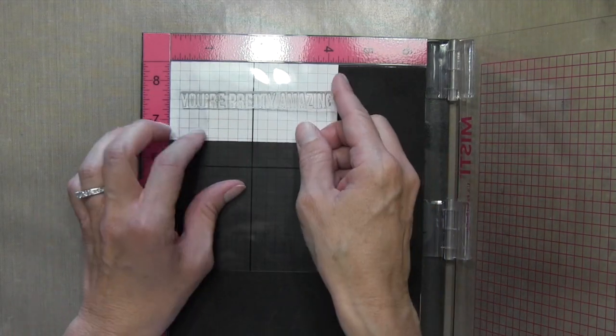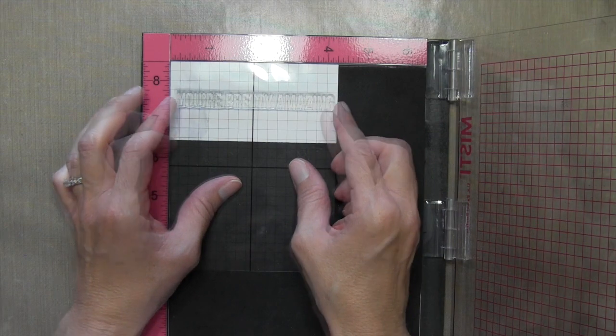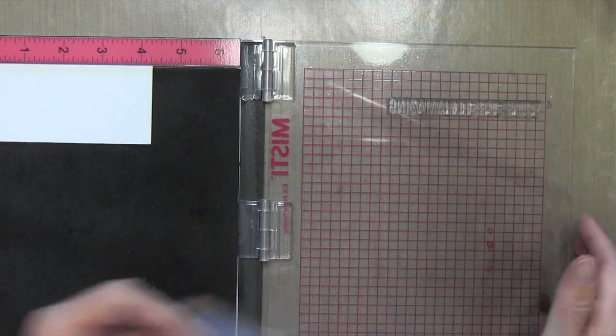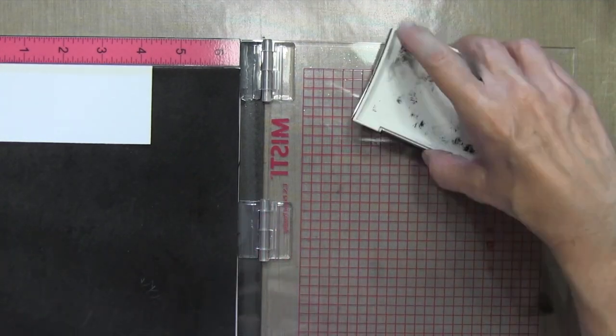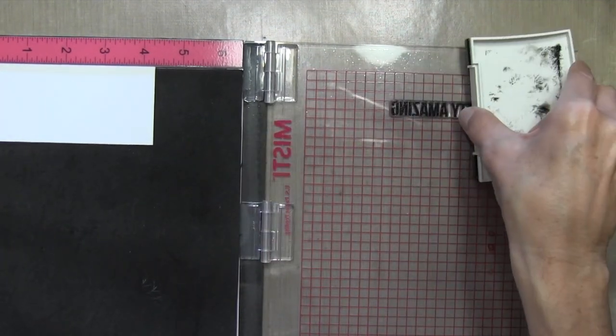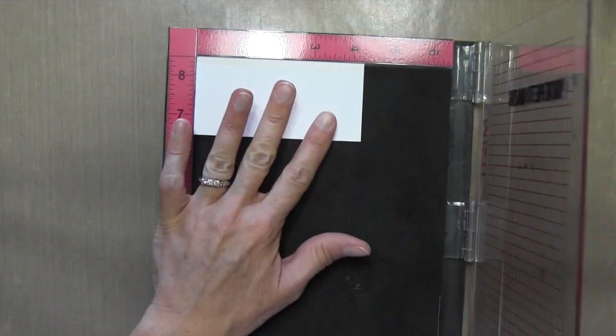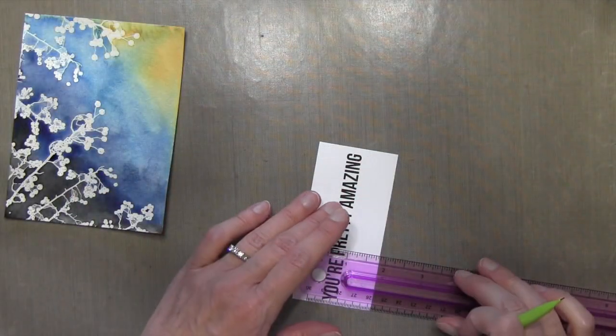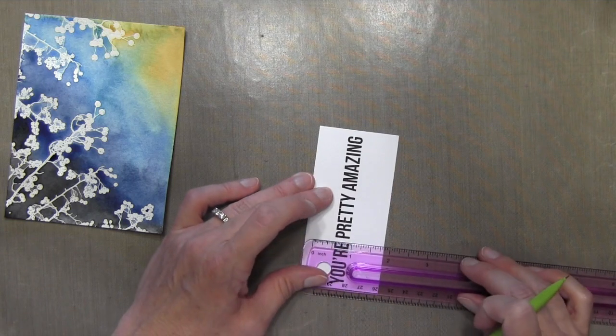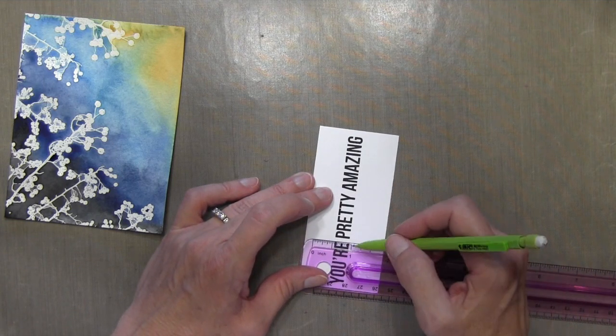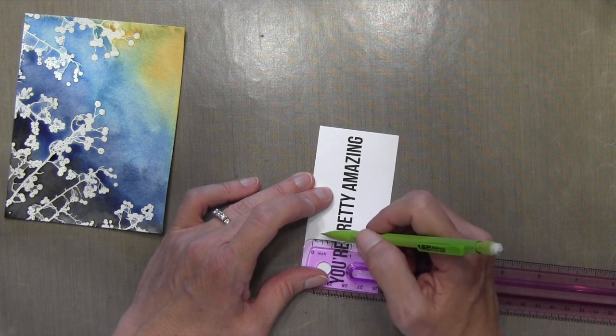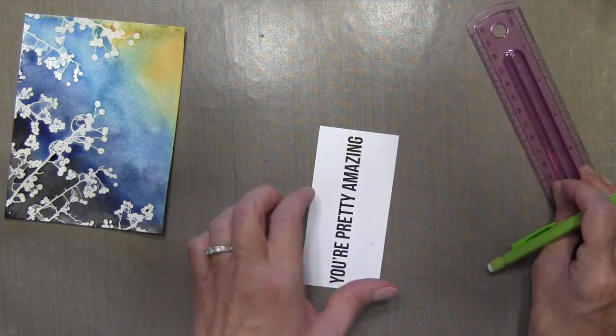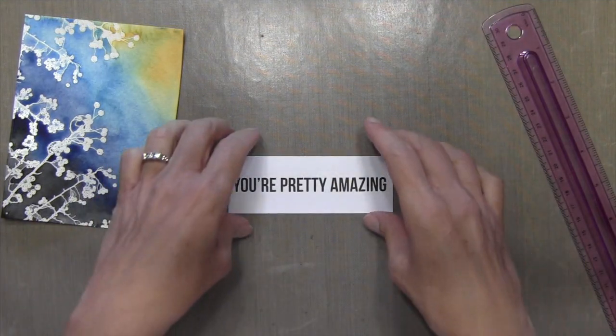I've got a piece of Neenah Solar White cardstock, which is cut to about two inches, and I'm centering my sentiment in the middle. I'm going to be using some VersaFine Black Onyx ink because it's a pretty thick sentiment, so it's got some thick lines, and I want to make sure I get good coverage, and I always get really good coverage with this VersaFine ink. Now I'm going to cut this piece to be an inch and a half total. So I'm centering my sentiment on the ruler, and then I'm going to mark it an inch and a half total. So then I'll trim that out with my trimmer.